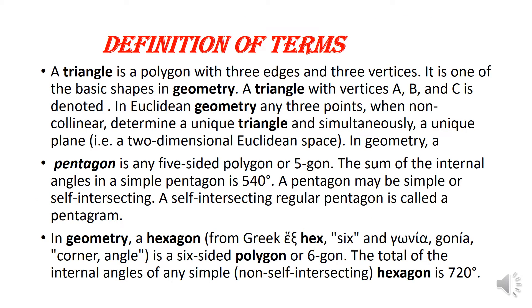A triangle is a polygon with three edges and three vertices. It is one of the basic shapes in geometry. A triangle with vertices is denoted. The three points within a non-collinear arrangement form a unique triangle in two-dimensional Euclidean space.